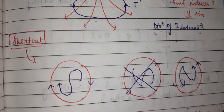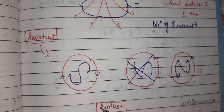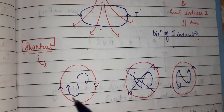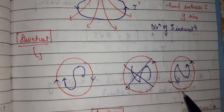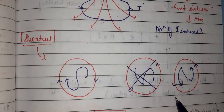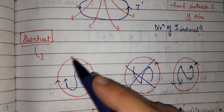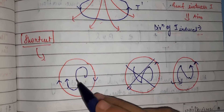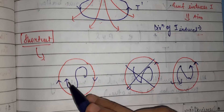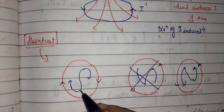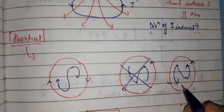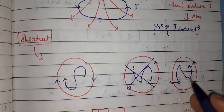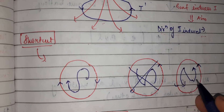There is a shortcut based on the clock face rule studied in Class 10th: if current flows in a clockwise direction, the loop behaves like the south pole of a magnet; if the current flows in an anticlockwise direction, the loop behaves like the north pole of a magnet.